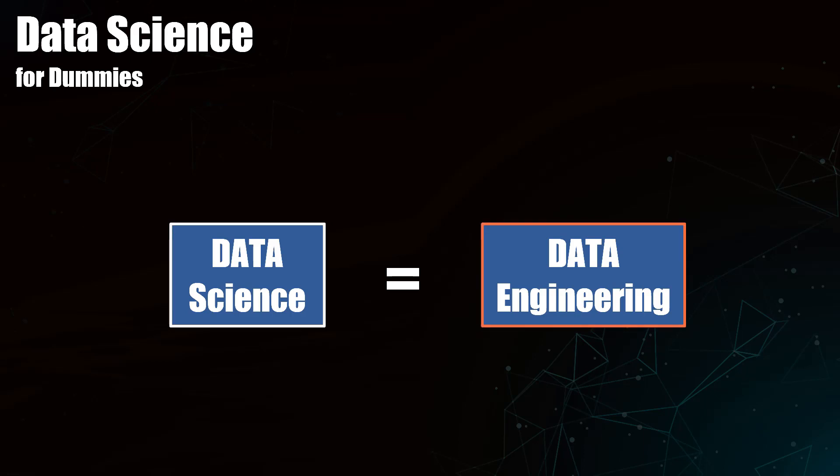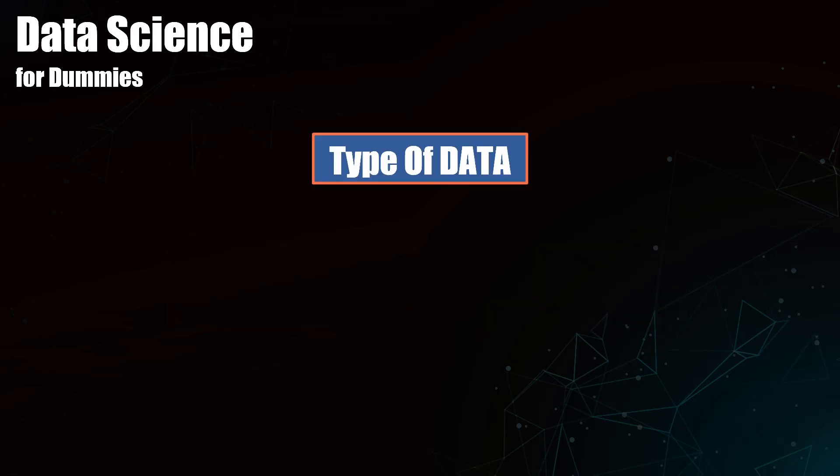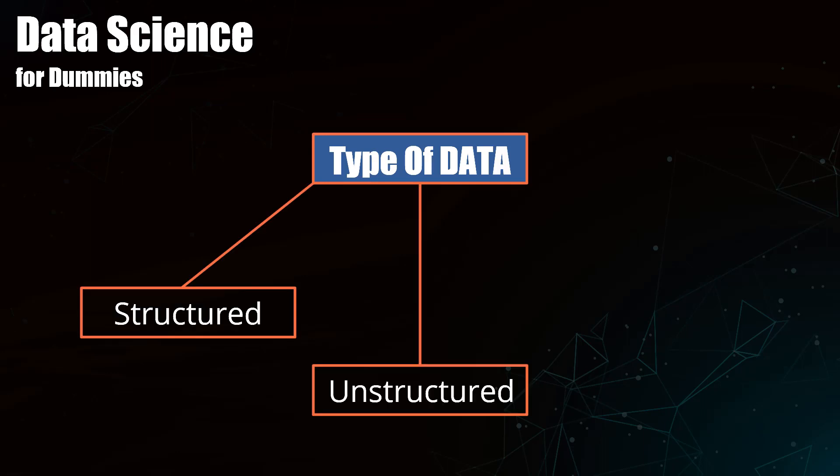Whether it be data science or data engineering, both of these processes are involved with three types of data: structured, unstructured, and semi-structured. When I say structured, it is stored, processed, and manipulated in traditional relational database management systems. When I say unstructured, it's data that is commonly generated from human activities that doesn't fit into structured database format.